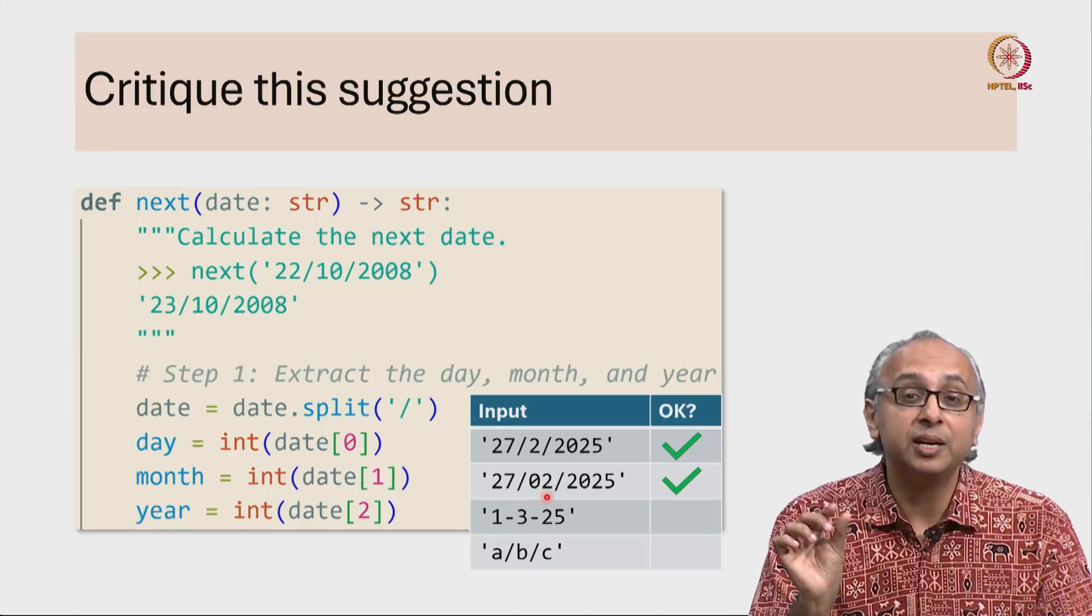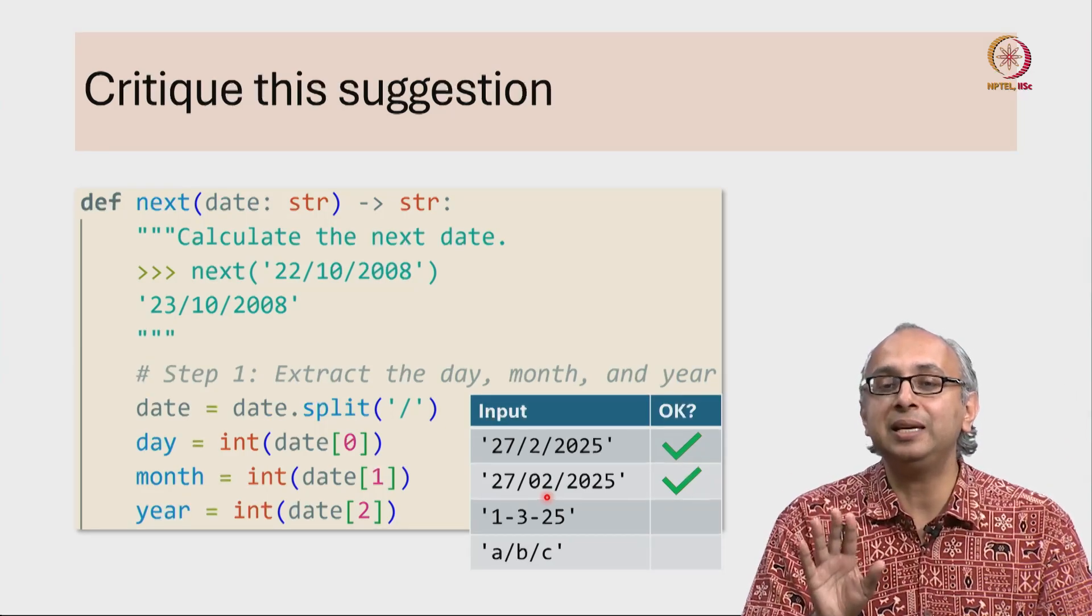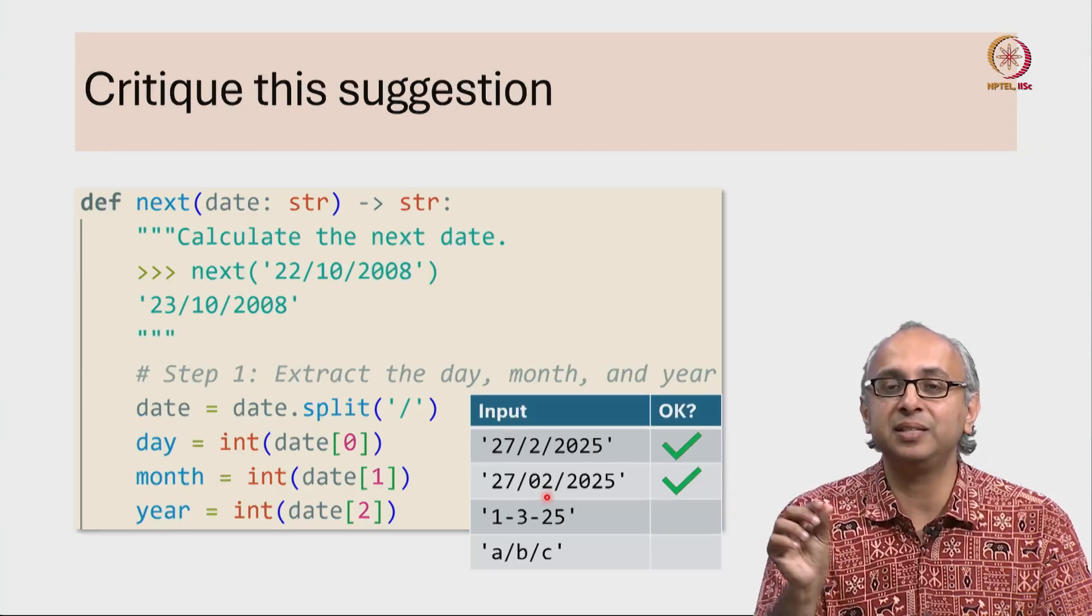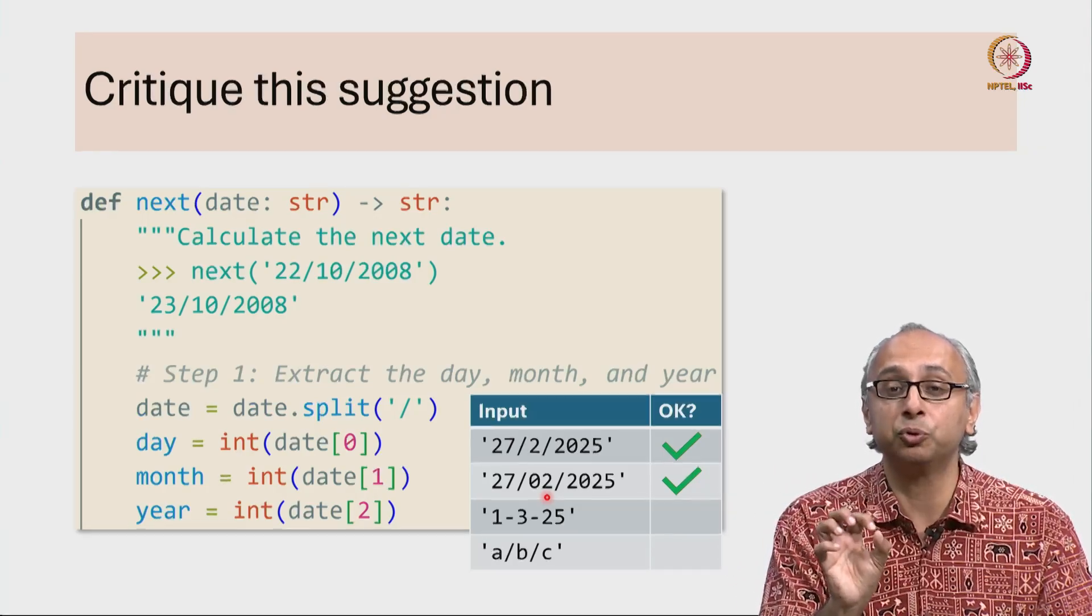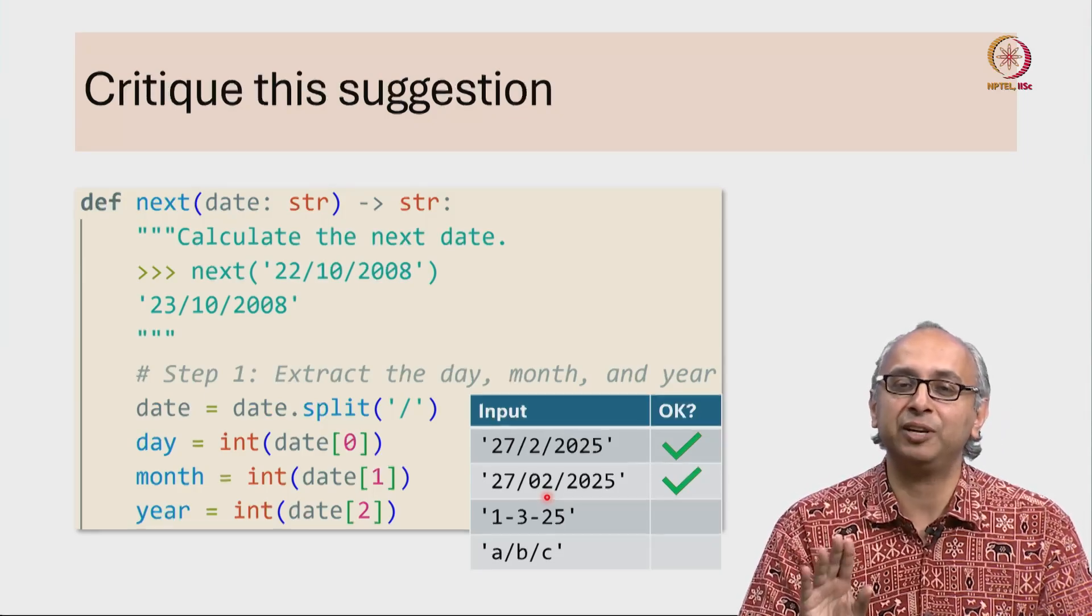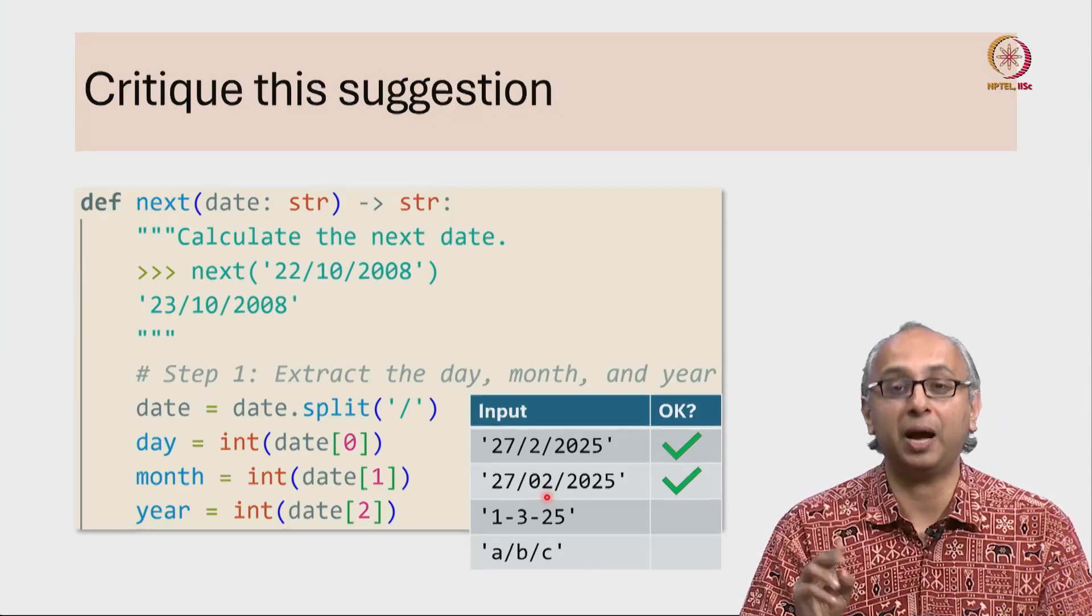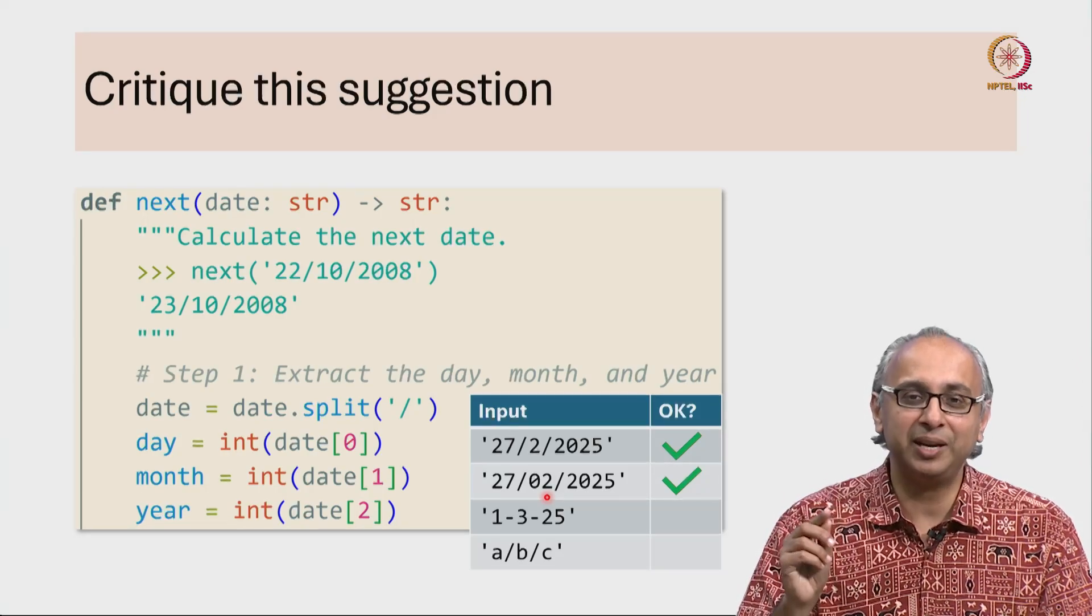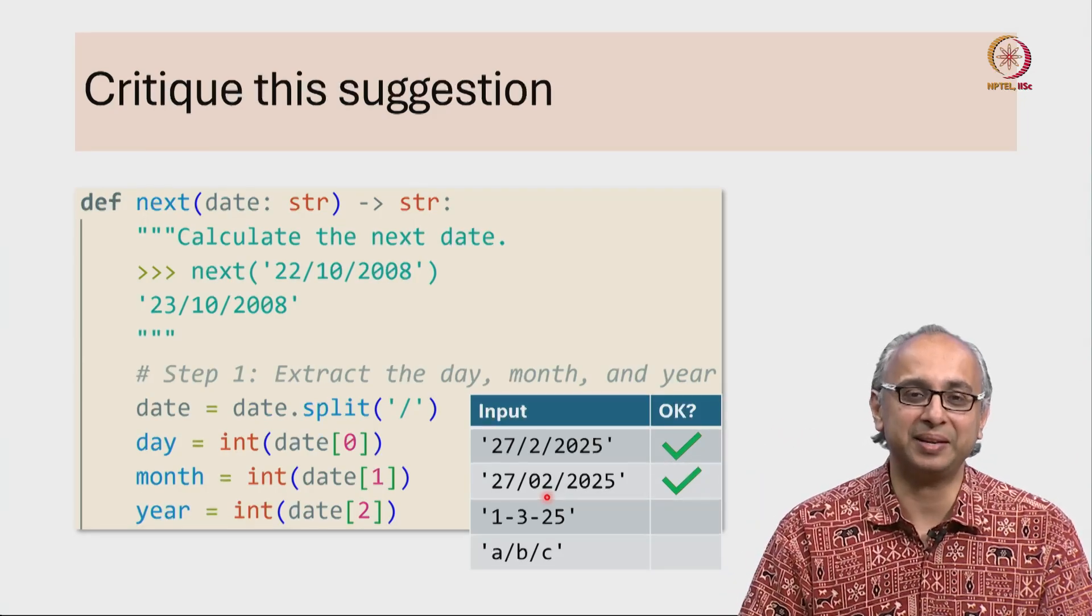02 is an illegal literal value. You cannot, for example, say x equals the int 02. But the string '02' can be converted safely into the integer 2. I didn't know that, and it's only once I tried it out that I realized my misunderstanding.